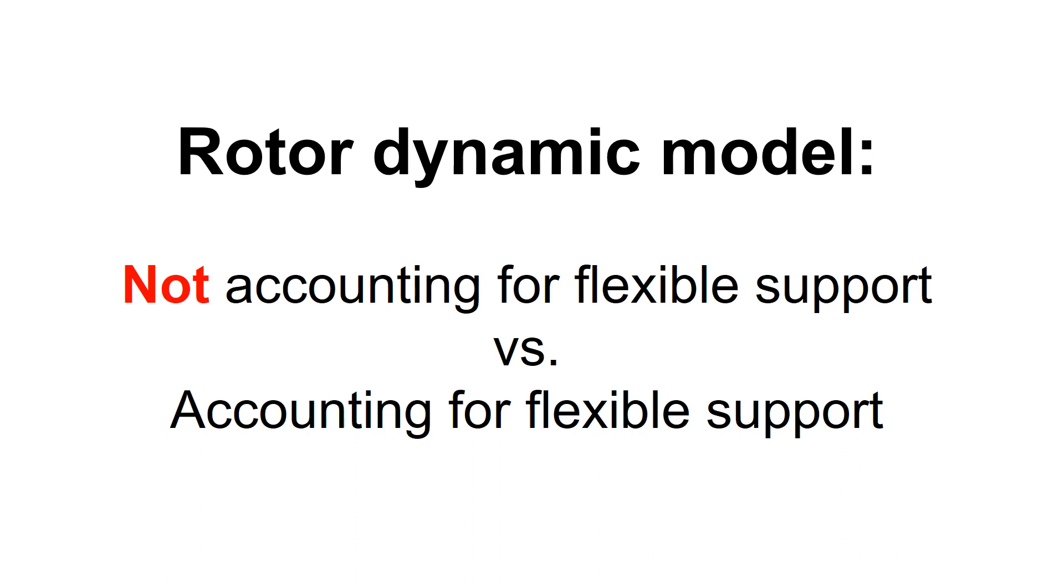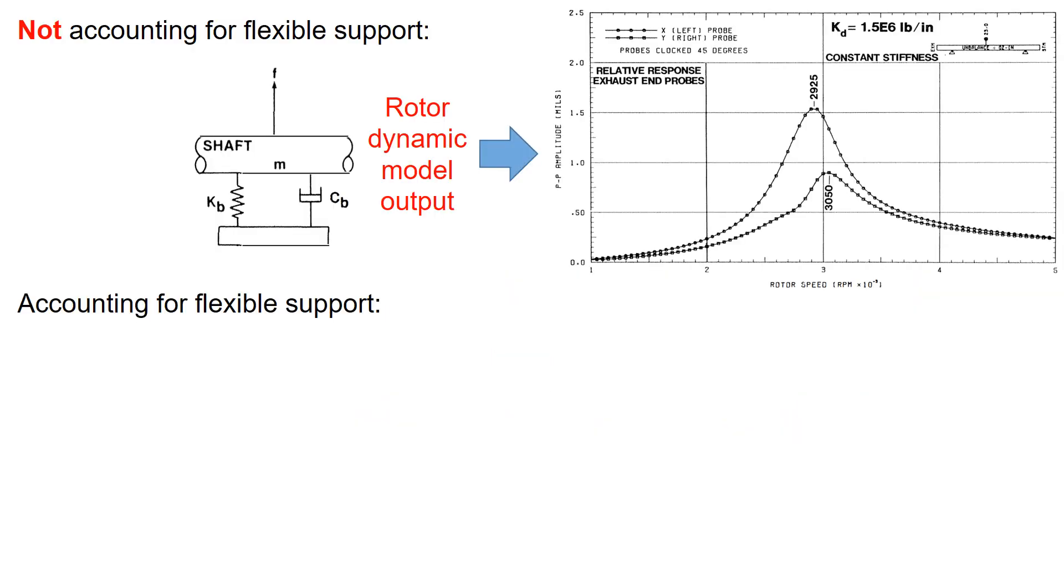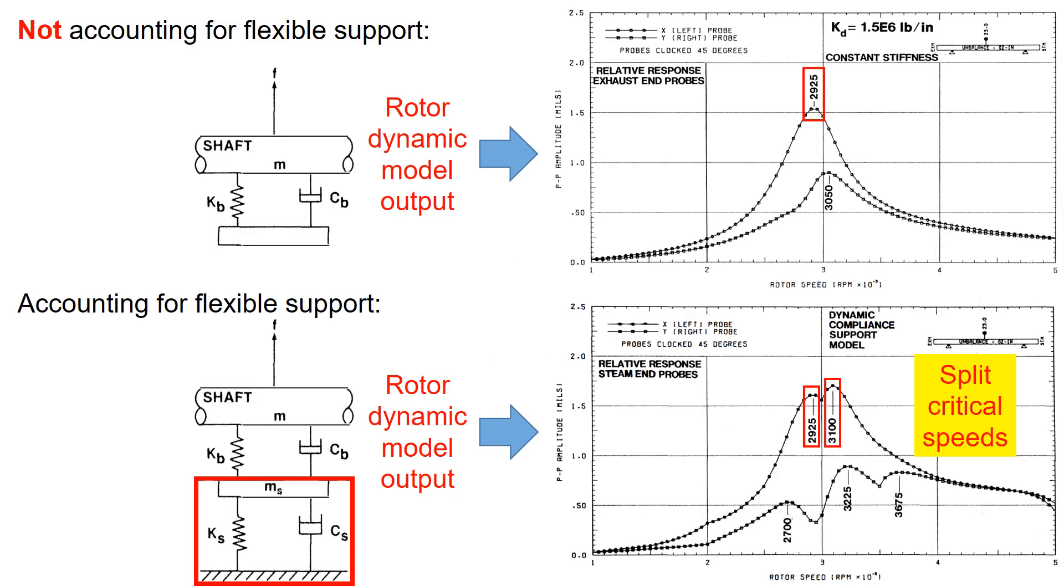Now let's compare two scenarios: accounting for flexible support in the model versus not accounting for it. When the rotor dynamic model accounts for flexible support, it predicts split critical speeds, while the one without only shows a single peak.